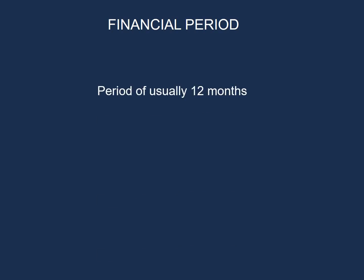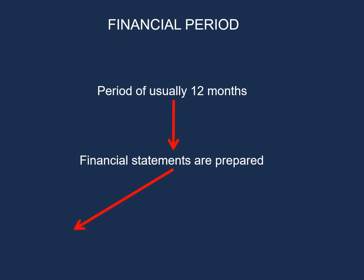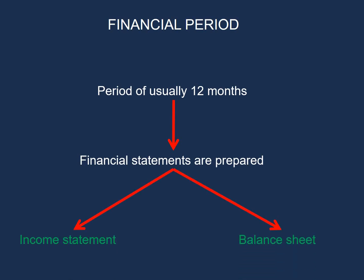In this lesson we will cover financial periods. A financial period is usually a period of 12 months by which a business prepares its financial statements. The financial statements comprise the income statement and the balance sheet. Now let's have a look at the following.